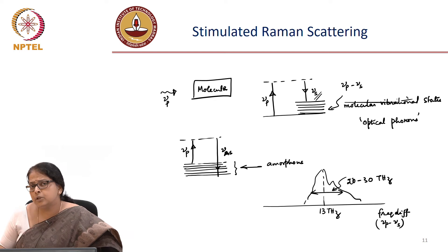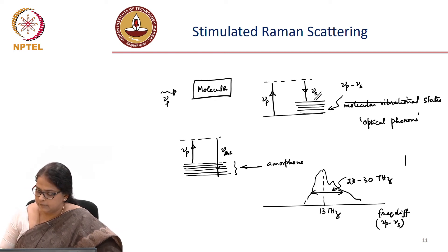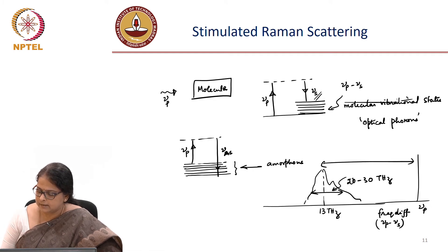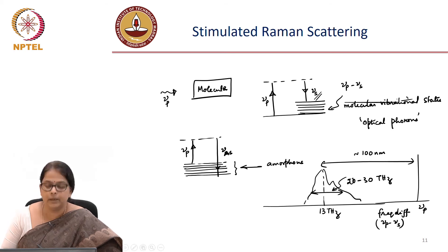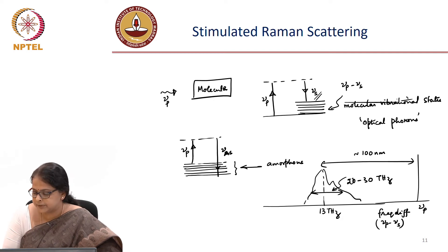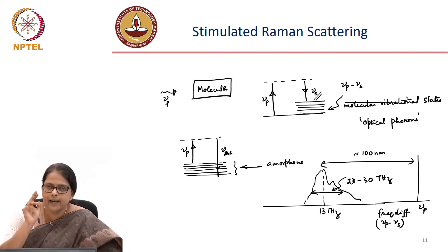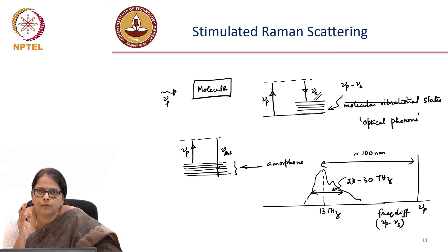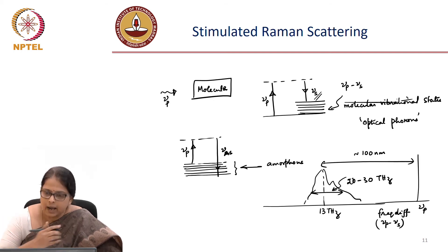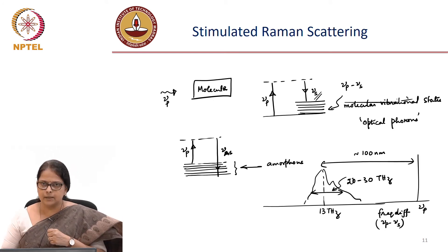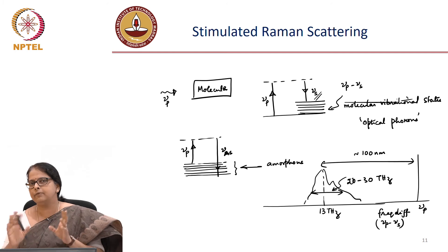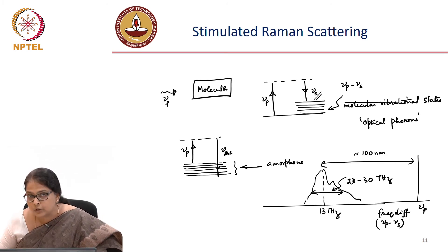The peak of the Stokes shift happens at about 13 terahertz from your pump, and this 13 terahertz corresponds to roughly 100 nm. The width of the gain spectrum is about 20 to 30 terahertz, meaning that if you excite a system with a single frequency, Stokes photons could come out as a result of scattering either in the forward or in the backward direction at any of these frequencies. Since this is an interaction directly with the molecules of the system, we do not have to worry about phase matching.